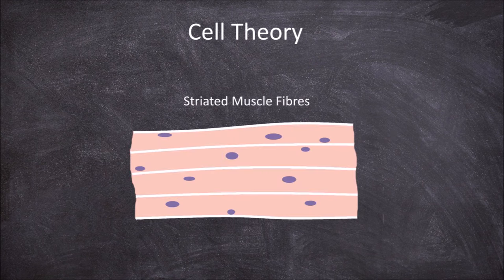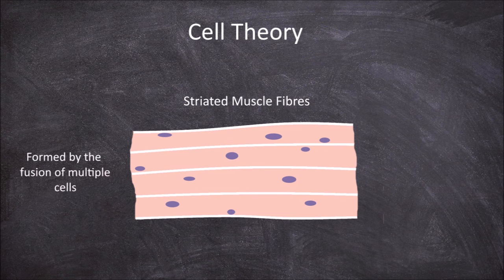Striated muscle fibers are an example of an atypical cell. Cells are generally considered to have a single nucleus and be small. Striated muscle fibers challenge the idea that cells are autonomous units as they are formed by the fusion of multiple cells. This fusion forms long fibers that consist of a single plasma membrane but have multiple nuclei.